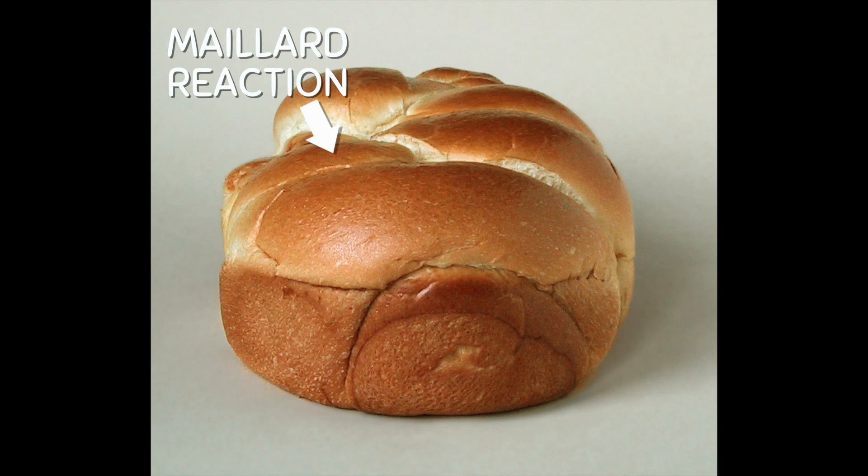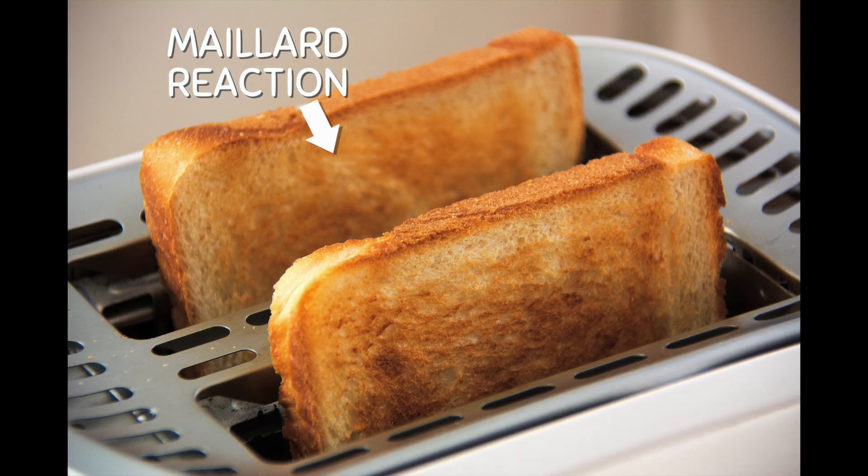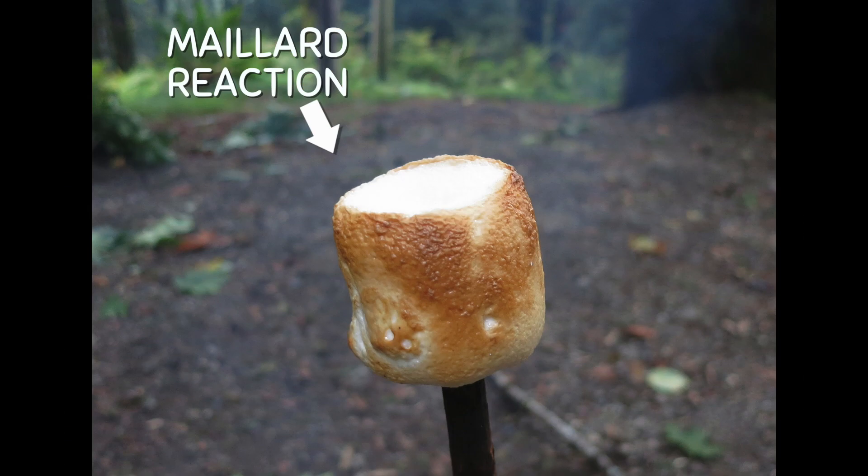It happens on the surface of foods and is what makes the outside of bread golden brown, turns bread into toast, and toasts marshmallows. Try it out yourself. What has more taste, a slice of bread or toast? Both pancakes and waffles are made with these reactions but not in the same amounts.